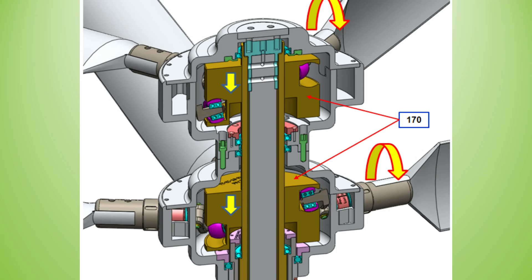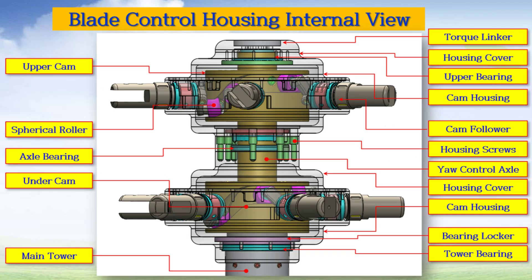In addition, this model has a blade pitch control mechanism that maximizes torque efficiency by moving the central axle up and down. This is a blade control housing internal view, and cams and cam followers engaged inside the housings.